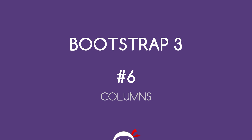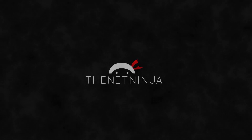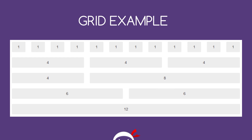Welcome to Bootstrap 3 lesson 6. In this video we're going to talk about columns. We already know that the grid in Bootstrap is split up into rows and columns within rows. We use columns to specify how much horizontal space we want a particular element to take up on a row. For example, some elements take up one column in width, others four, eight, six, twelve, etc.